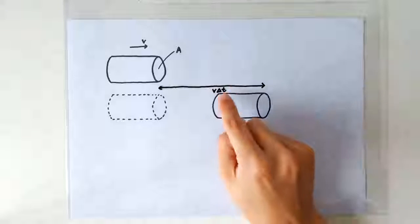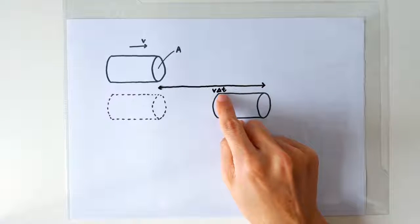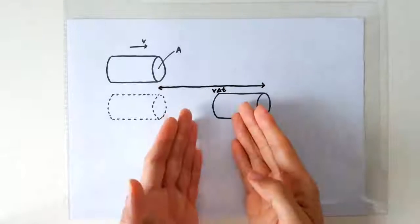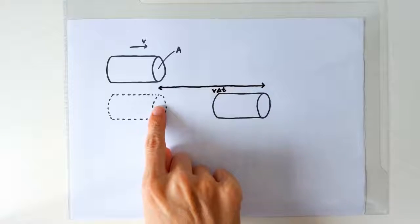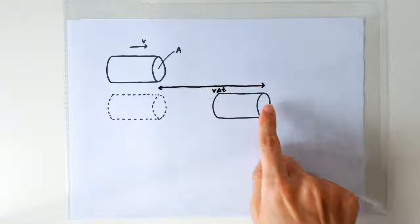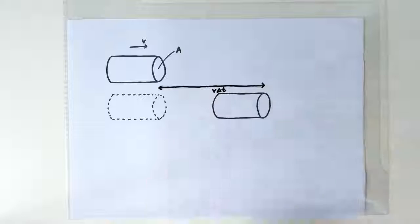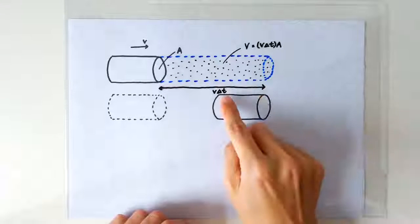First, let's give this cylinder an amount of time delta t. So in this amount of time, the cylinder would have advanced by a distance of V times delta t.